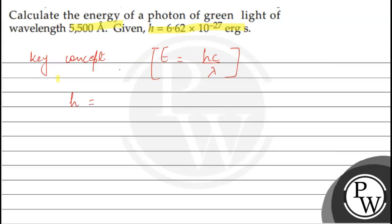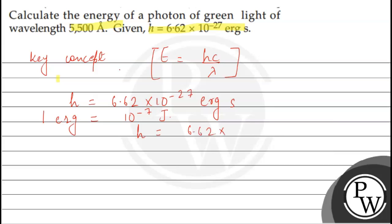Now, h is given as 6.62 into 10 to the power minus 27 erg second. We know that 1 erg is equal to 10 to the power minus 7 joule. So if we convert h into joule, h is equal to 6.62 into 10 to the power minus 34 joule second.